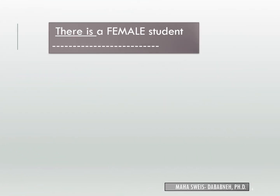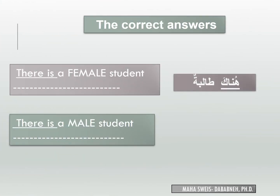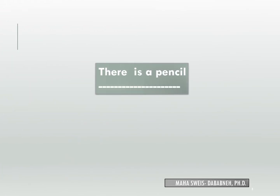How do you say 'there is a female student' and 'there is a male student'? Write down the answers. The answer for 'there is a male student' uses Hunaka with the appropriate noun form.